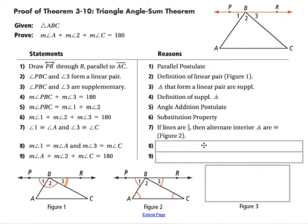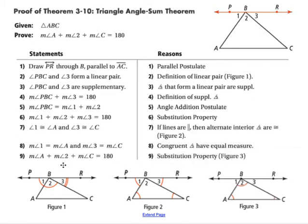So now we can go ahead and say that the measures of their angles are congruent, which allows us to use substitution and prove what we were trying to prove, that the measure of angle A plus 2 plus C is 180 degrees. And all we did here is we substituted instead of angle 1, we put in angle A. And instead of angle 3, we put in angle C.